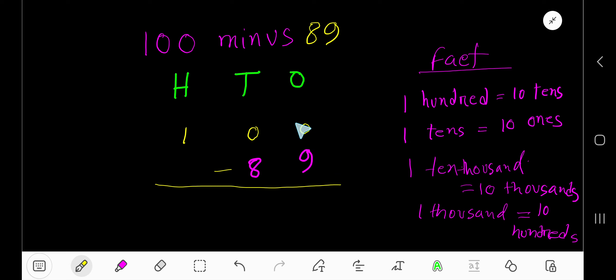So you need to borrow. Go to the next column. You can't borrow from 0, go to next column. If you borrow from 100, then you will have 0. 100 equals 10 tens, that is 100 becomes 10 tens in the tens column.